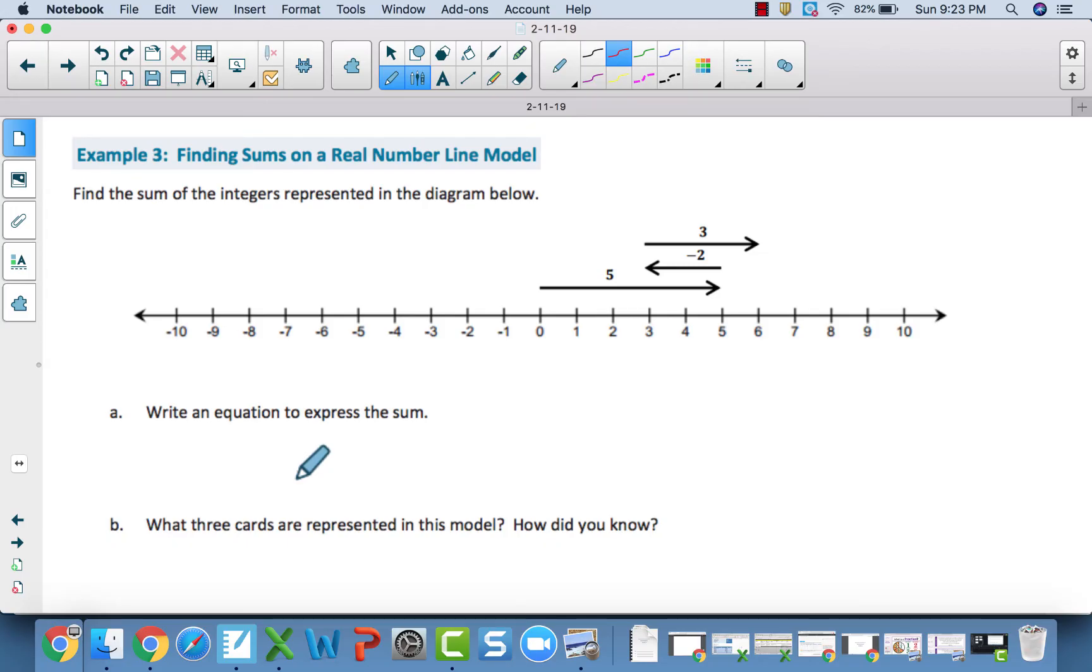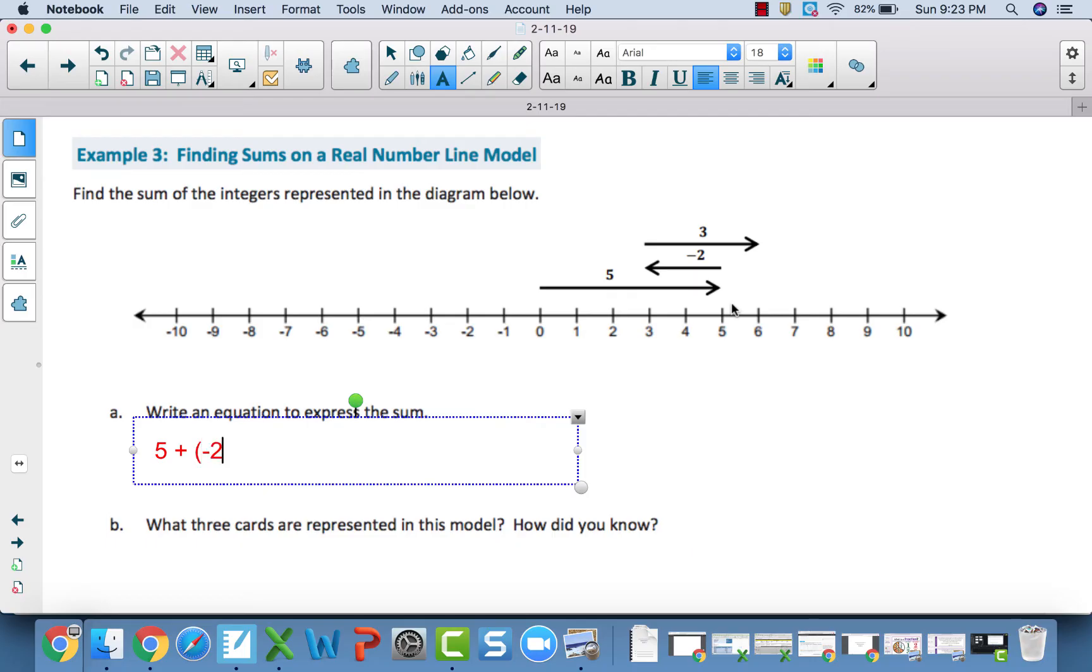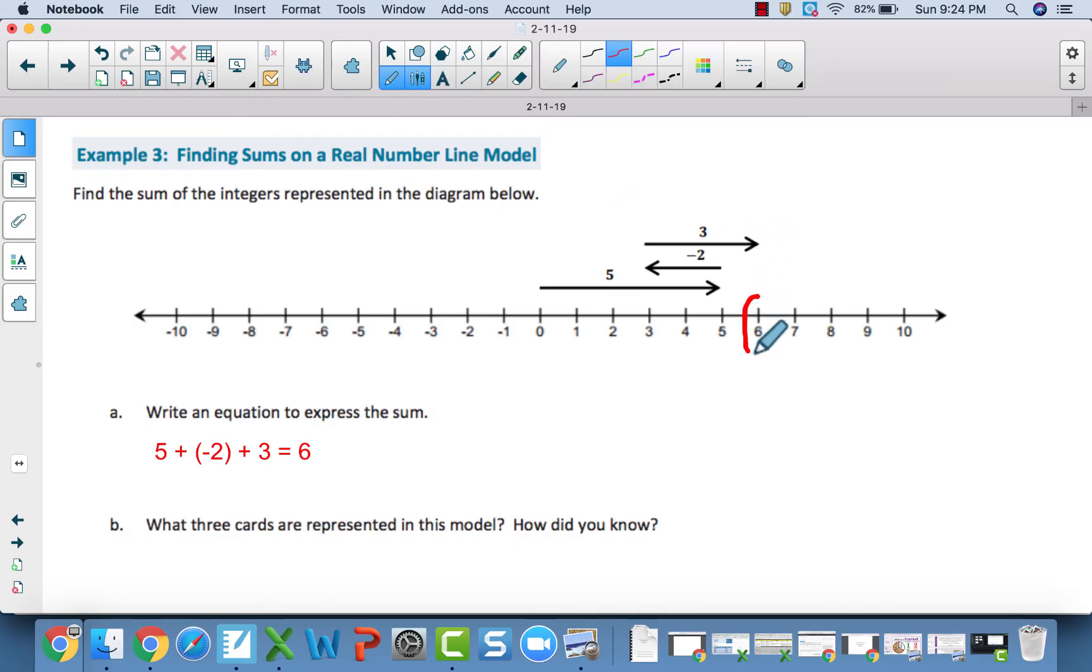Example number three, we are going to find the sum of the integers represented in this diagram. So, the first thing we are going to do is write an equation to express the sum. The arrow I see closest to the number line, and therefore what we are starting with, and also the arrow where the tail end is beginning at zero is five. Then, where five ends, I see that I have an arrow that is negative two. It's pointing to the left two units, and then I see on the top an arrow that is going right three units. And we end up at six when we are done, making six the sum of five, negative two, and three.